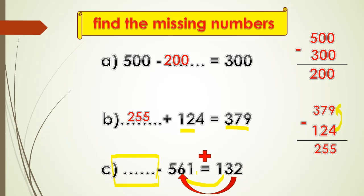Two plus one equals three, six plus three equals nine, five plus one equals six. So the answer is six hundred ninety-three.